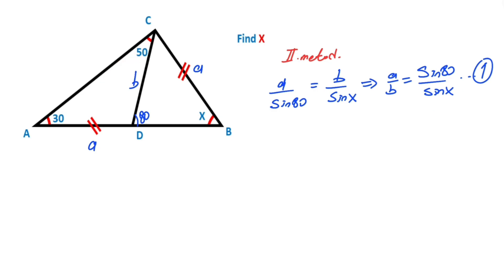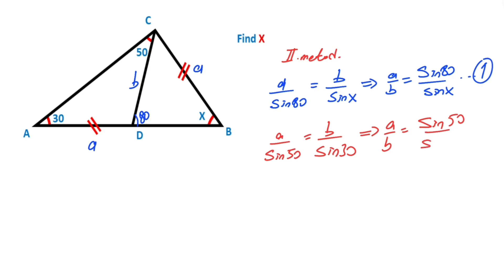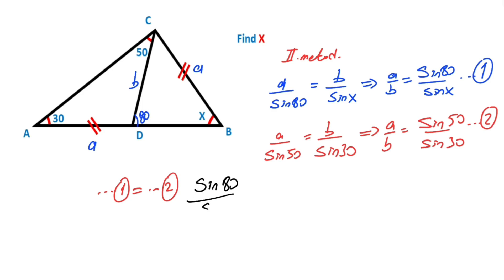Then for the other triangle, let's apply the sine rule once more: A over sine 50 must equal B over sine 30. This is the second equation. If we equalize the first and second equations, we get A over sine 40.